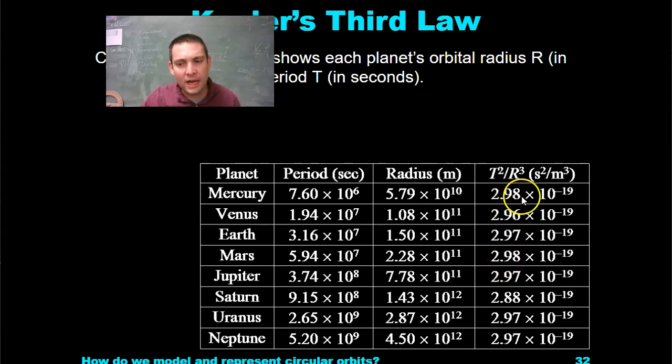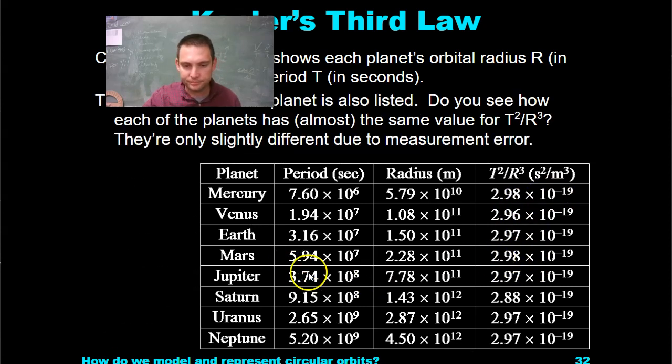Not 2.97, 2.98 times 10 to the negative 19th, an incredibly small number. So small that there's going to be some fluctuations expected in this data, some measurement error. Maybe Jupiter has a period of 3.74001.